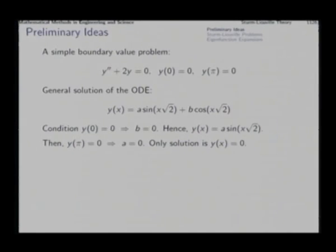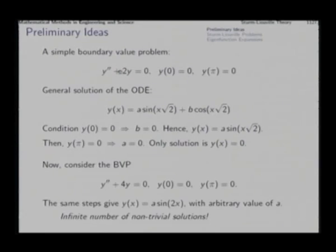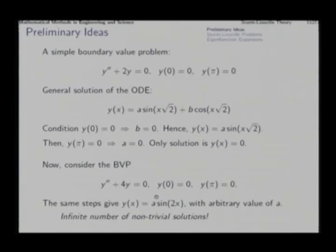In a similar manner, we try to solve another boundary value problem in which everything remains the same except that this 2 changes to 4. Exactly the same steps give us the solution y equal to a sin(2x), in which a can be arbitrary.